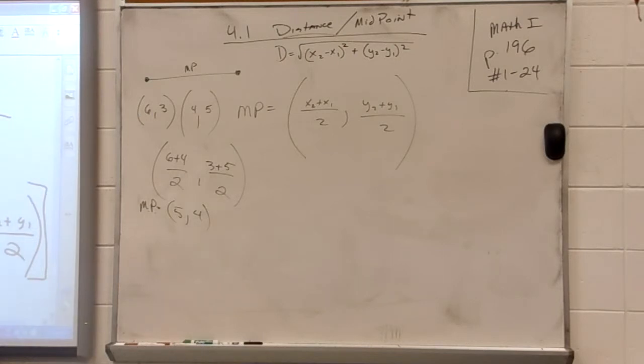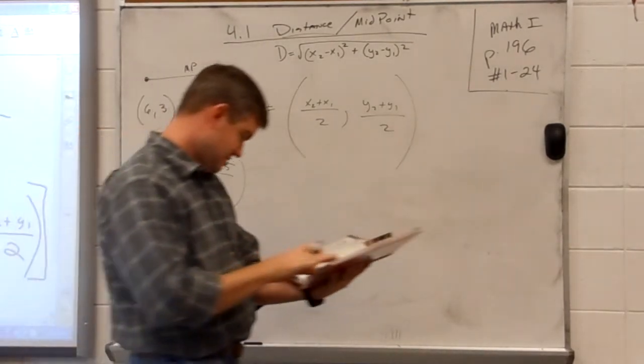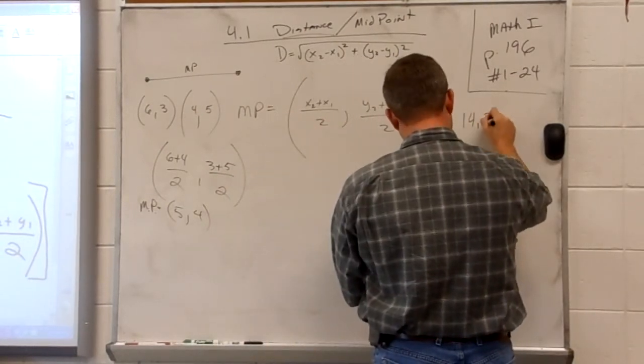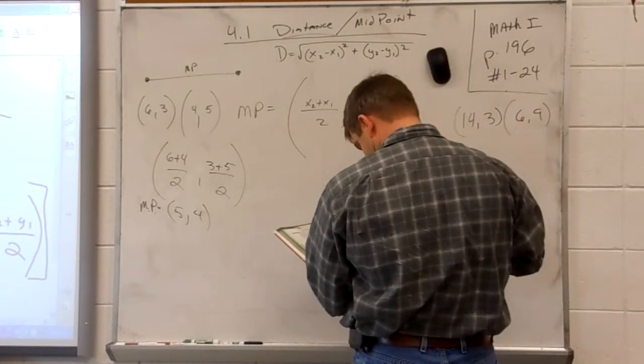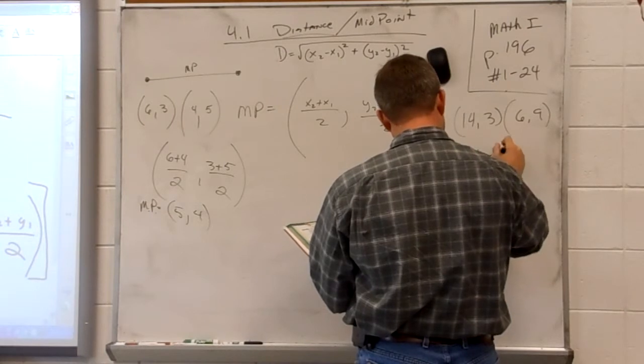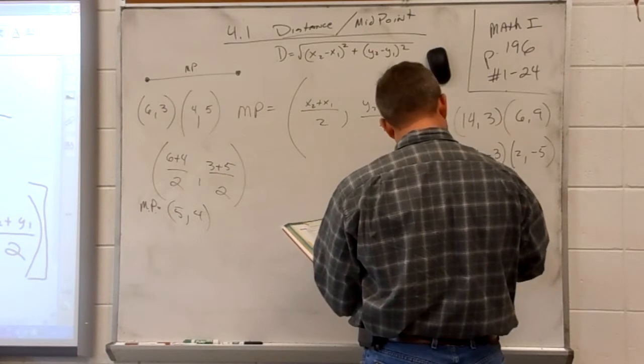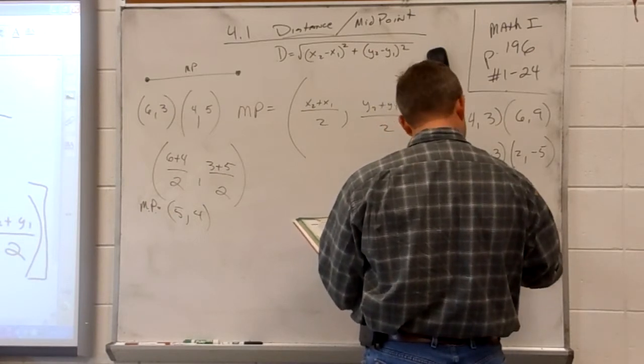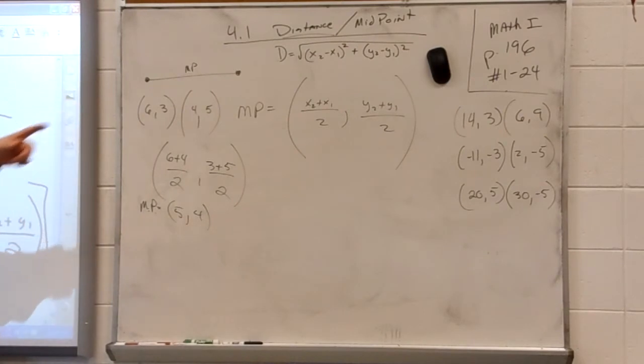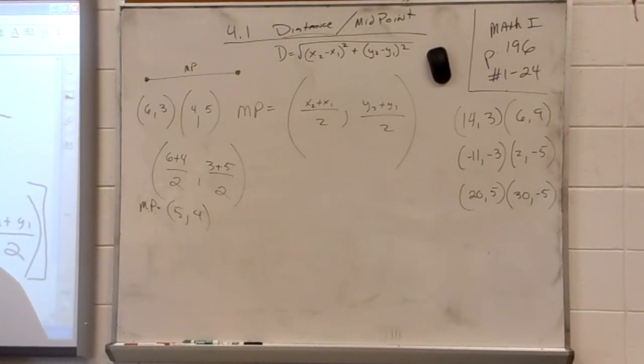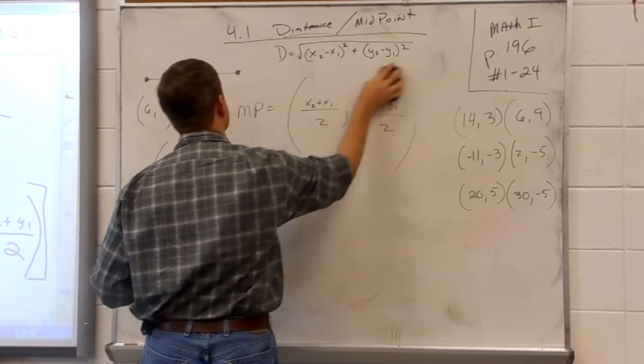Anybody else have a question? All right, let's do a few examples. Find the midpoint of 14, 3, and 6, 9. Find the midpoint of negative 11, negative 3, and 2, negative 5. And find the midpoint of 25 and 30, negative 5. Three problems. Find the midpoint. They're over there on the right-hand side. Find the midpoint of those three points. Thank you.